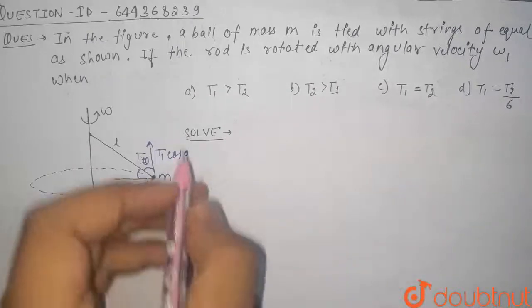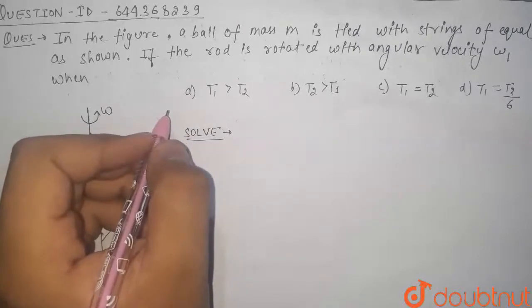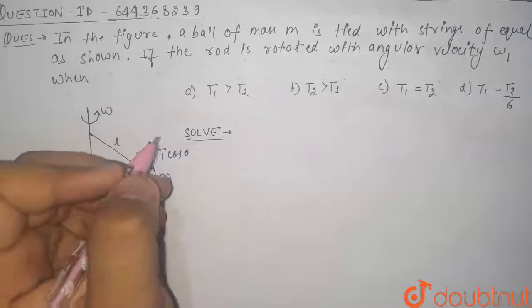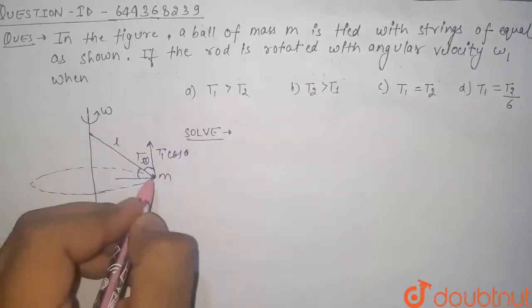So guys, see here in this question it is given that a ball is rotating in a circular path with omega 1, and we have to find the relation between T1 and T2 tension.